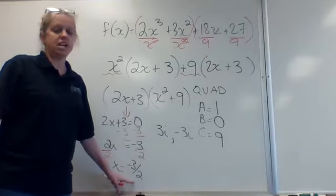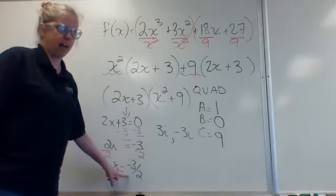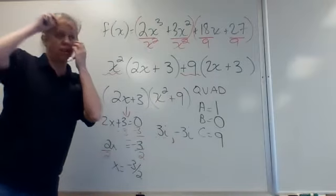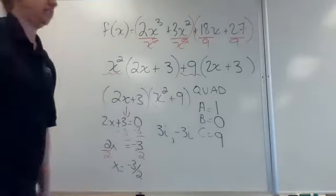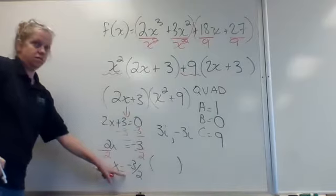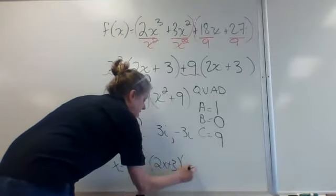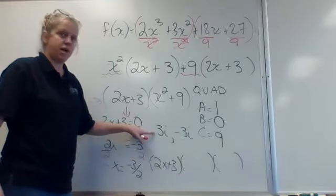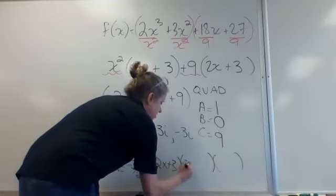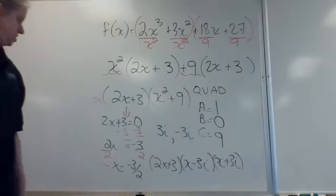So there are three zeros. Negative three halves is the one rational zero. The other zeros are 3i and negative 3i. For the factorization, negative three halves came from 2x plus 3; 3i came from x minus 3i; and negative 3i came from x plus 3i.